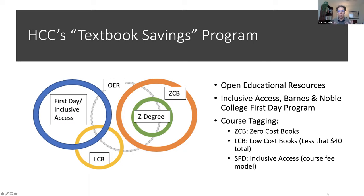When we started our Z-degree program in fall of 2017, it was a pilot to tag courses and provide zero-cost courses for students aligned with a structured schedule so that students could complete an associate's degree in two years without ever having to purchase a textbook. We step-by-step built out that degree program at our largest campus, Central Campus. A full slate of classes has been offered since spring 2019 for an Associate of Arts in Business, an Associate of Arts in Multidisciplinary Studies, and an Associate of Science — three degree programs.